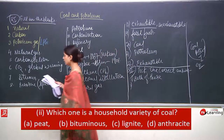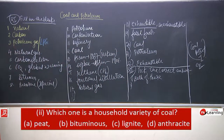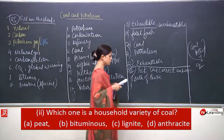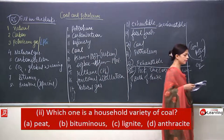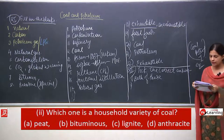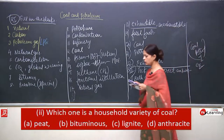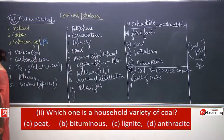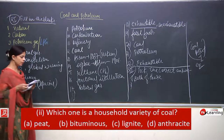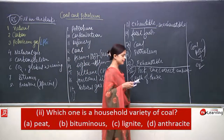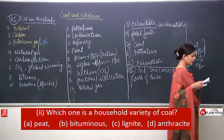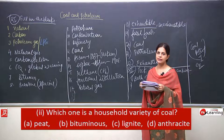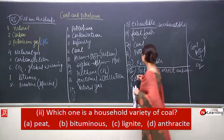Question 2: which one is a household variety of coal? Options are peat, bituminous, lignite, and anthracite. The answer is bituminous.